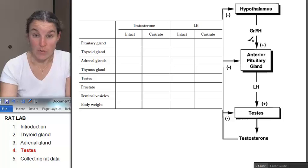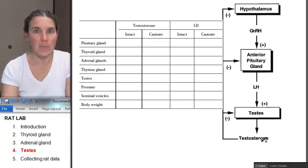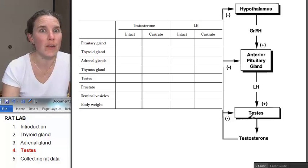The hypothalamus produces gonadotropin-releasing hormone, which tells the anterior pituitary to make LH, luteinizing hormone, which tells the testes to make testosterone. The more testosterone you have, that actually feeds back negatively to the testes and says, whoa, too much testosterone, no me gusta.